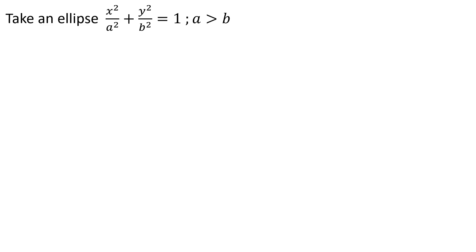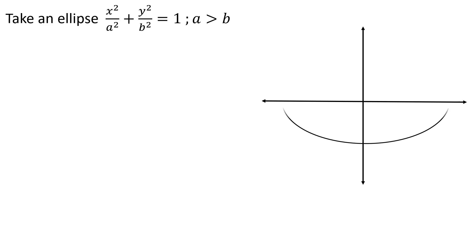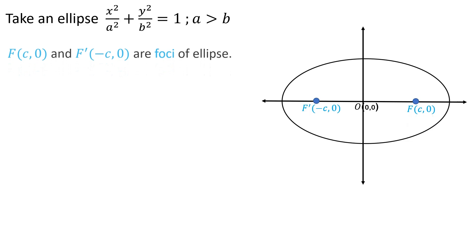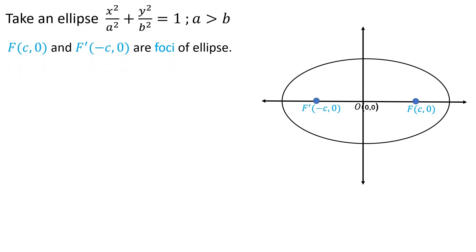Here a is the semi-major axis and b is the semi-minor axis of the ellipse. Let's draw the ellipse. O (0, 0) is the center of the ellipse. F (c, 0) and F' (-c, 0) are the foci of the ellipse, therefore the distance between O and F is c.